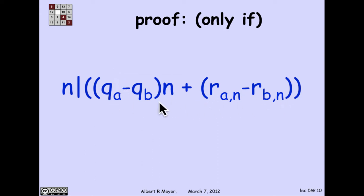So if n divides a minus b, looking at a minus b in that form, what we're seeing is that n divides this q_a minus q_b times n plus the difference of the remainders. That's what I get just by subtracting a and b. But if you look at this, n divides that term, the quotient, times n.